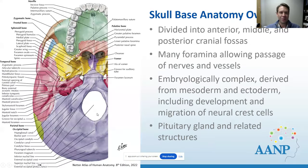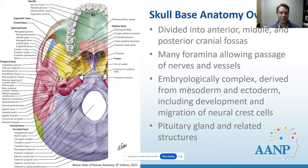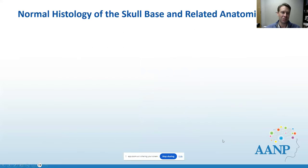Here's a picture from Netter of the skull base divided into the anterior, middle, and posterior fossae. We have all these foramina with passages of nerves and vessels, and this area is very embryologically complex. We have mesoderm, ectoderm, and migrating neural crest cells, and because of this we can have very interesting and rare tumors as well as developmental abnormalities. We also have the pituitary gland and related structures.